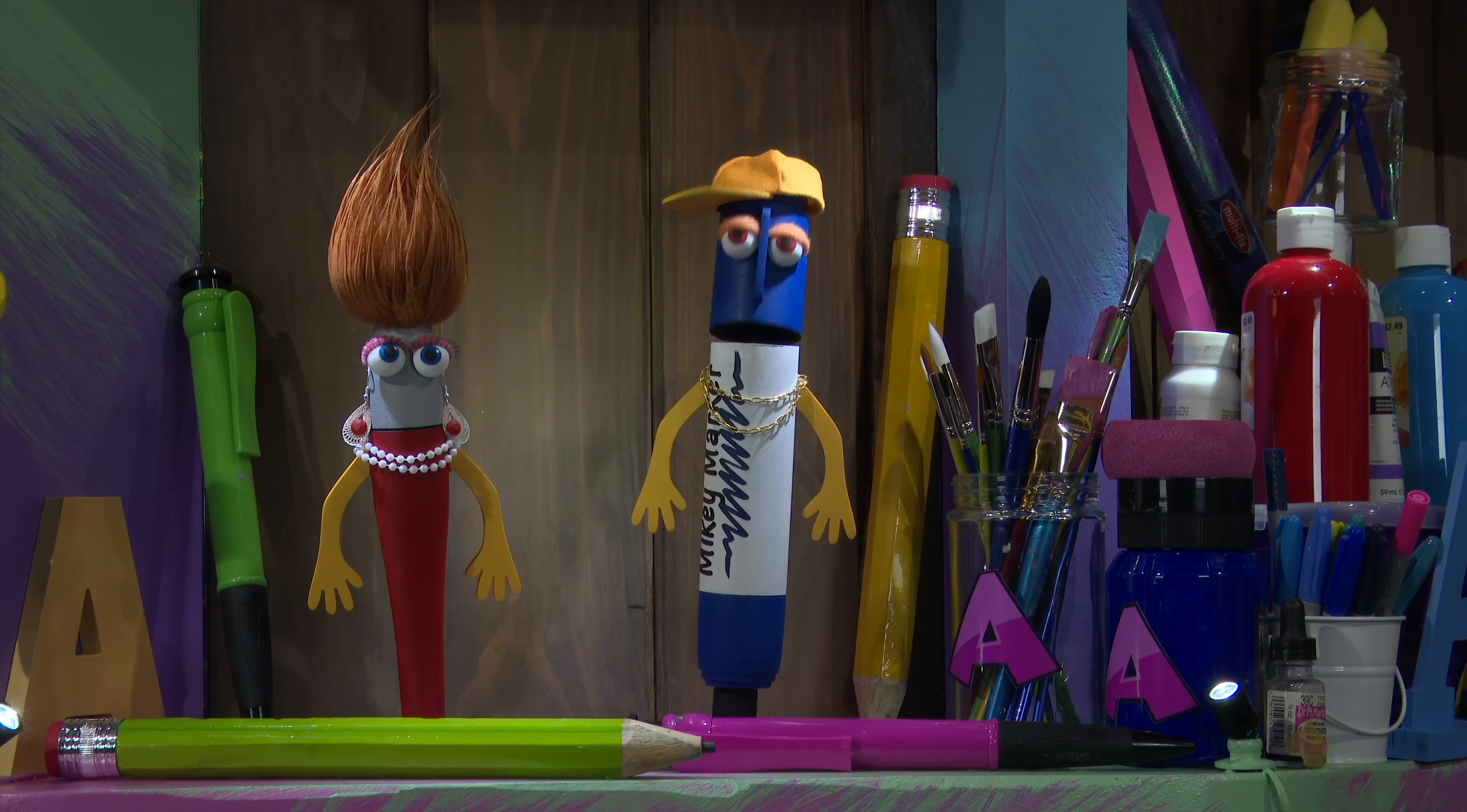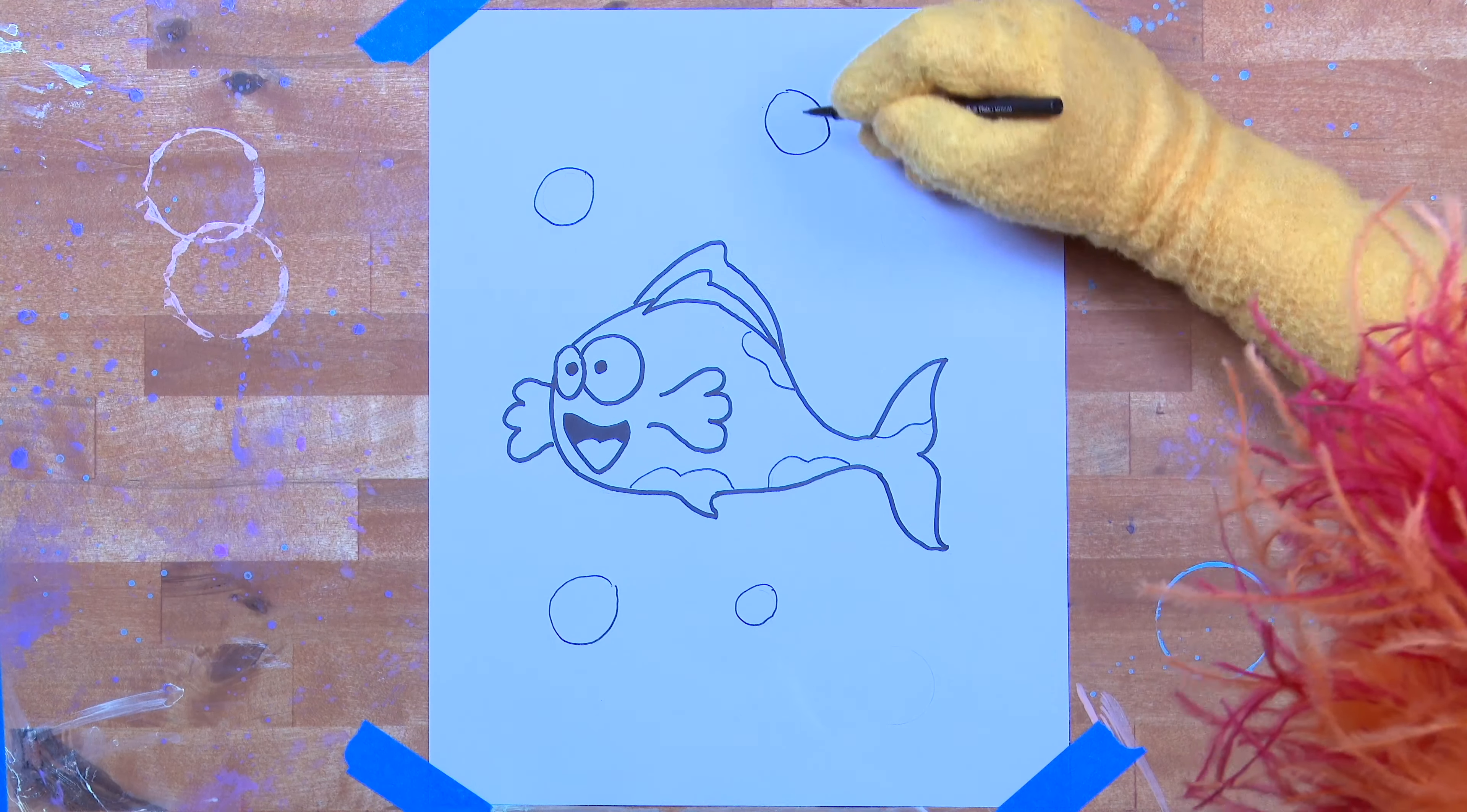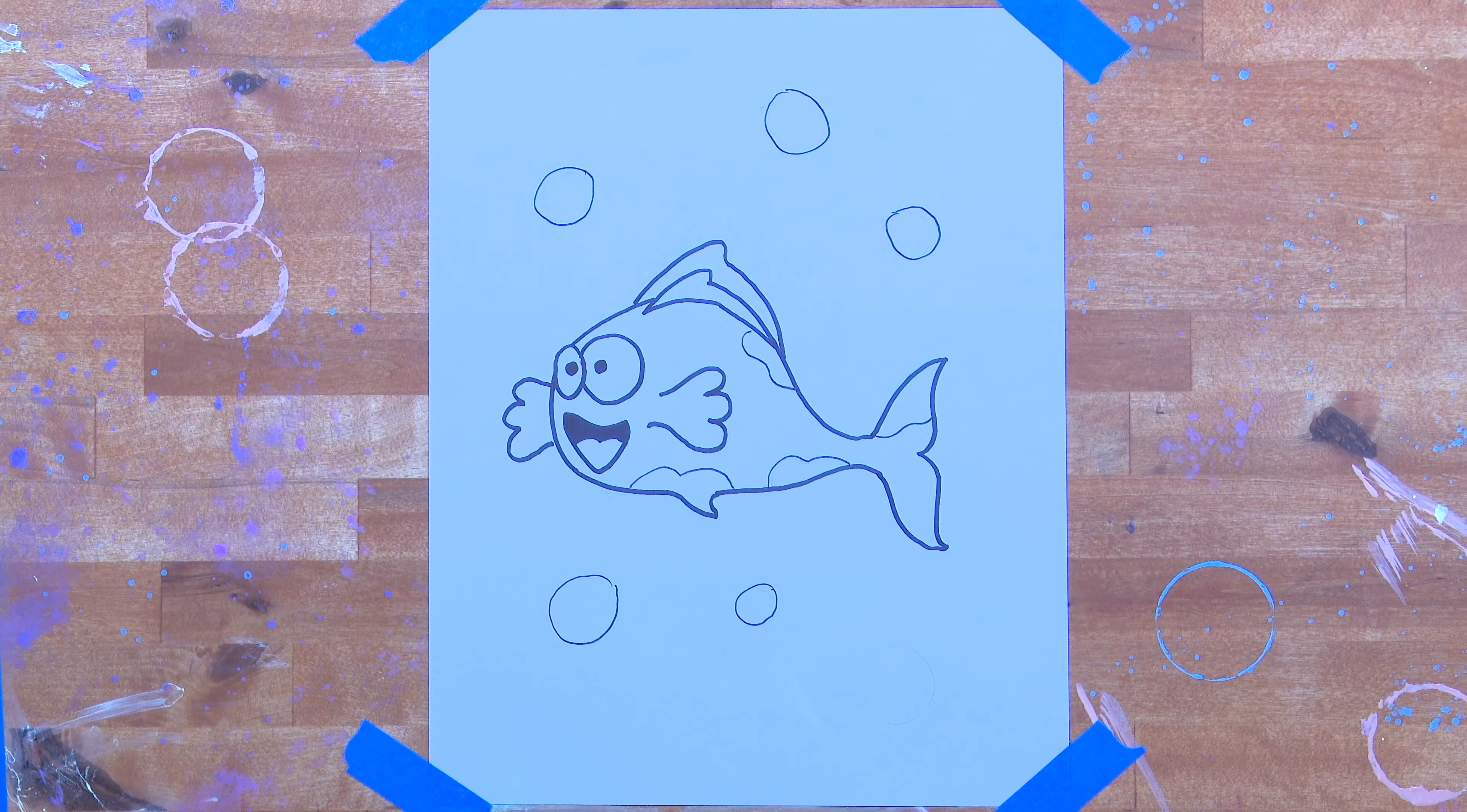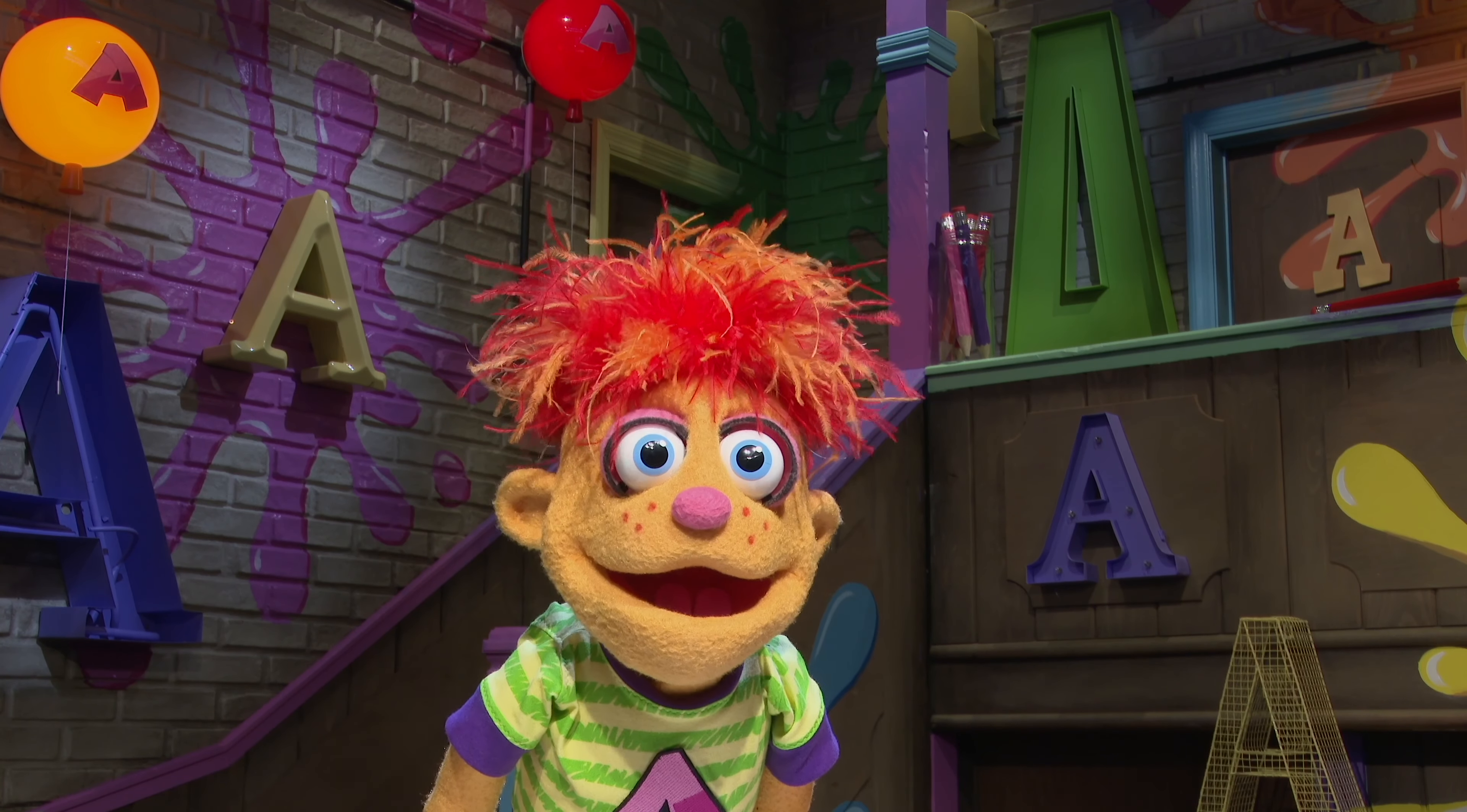Now let's draw some bubbles to show that our fish is swimming under the water. You guys really do have the best view from your shelf. You can look right down on Artie while he's drawing. Can you count the bubbles with me? One, two, three, four, five. Winning! Awesome job, Artie. Now you've just got to color it in.